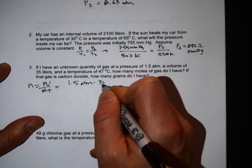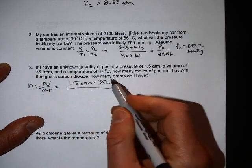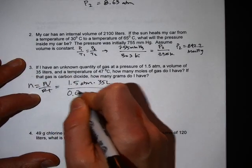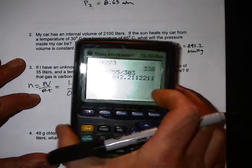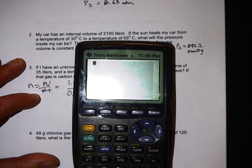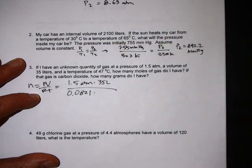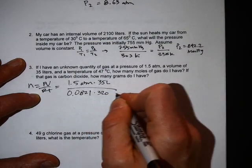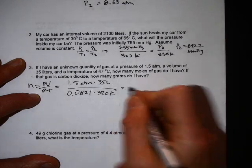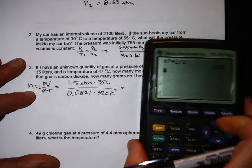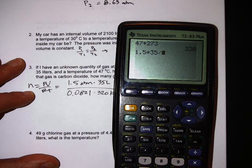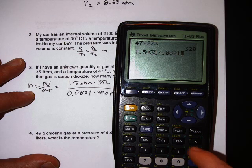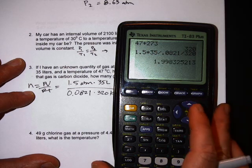The R for atmospheres is 0.0821 and the temperature is 47 plus 273, which is 320. So then solving for moles you get 1.5, about 2.